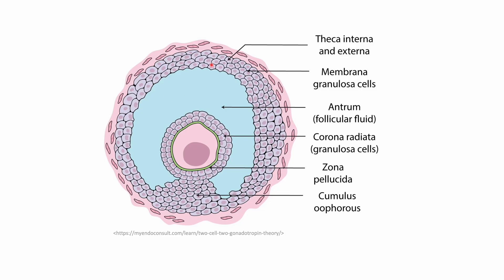Granulosa cells are sensitive to FSH, and they support the growth and development of the housed oocyte. These cells produce estrogen and progesterone as well. Inside of the follicle, if it matures into an antral follicle, is follicular fluid and the oocyte surrounded by corona radiata and a layer of granulosa cells, as well as the zona pellucida and the cumulus oophorus.